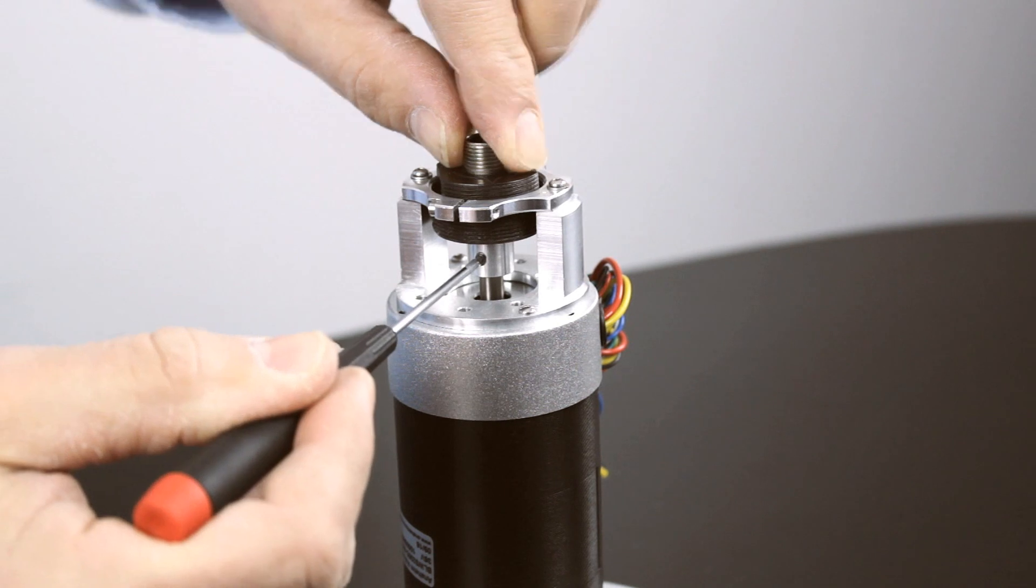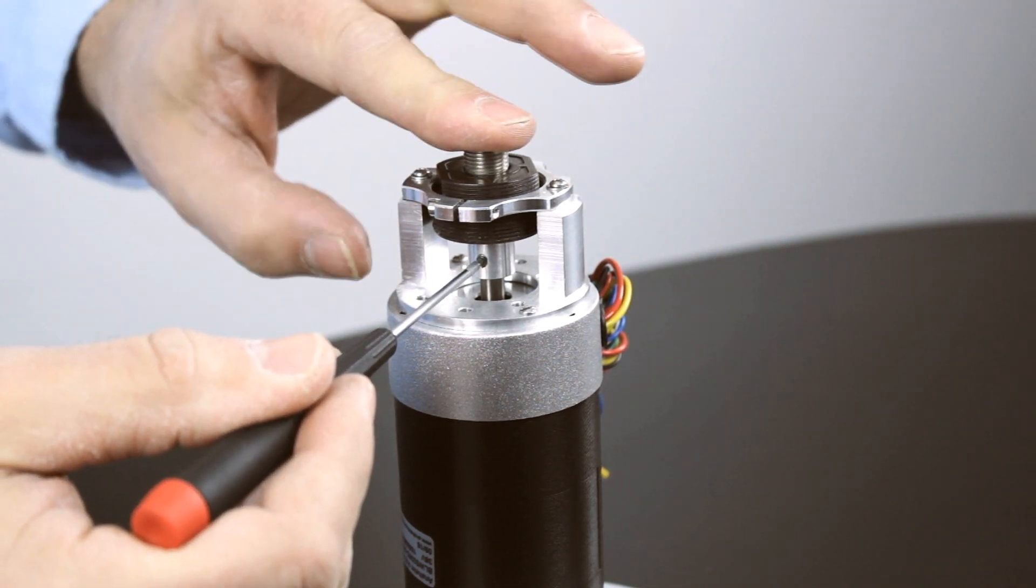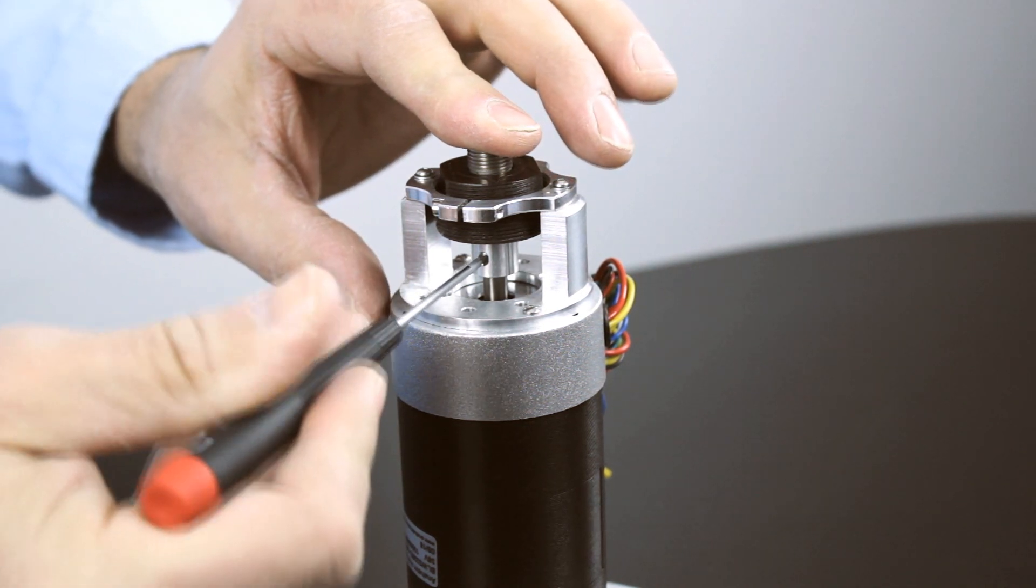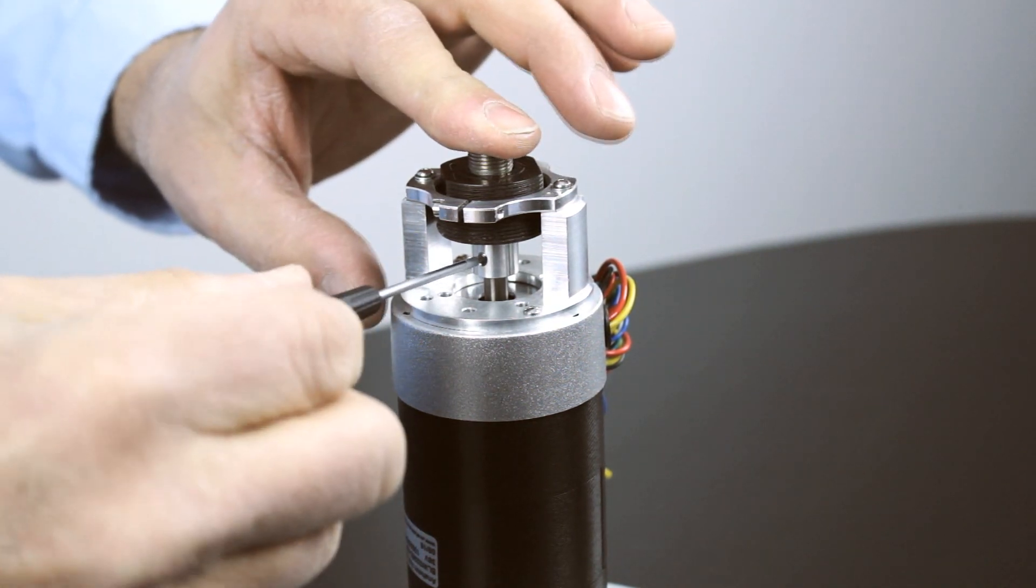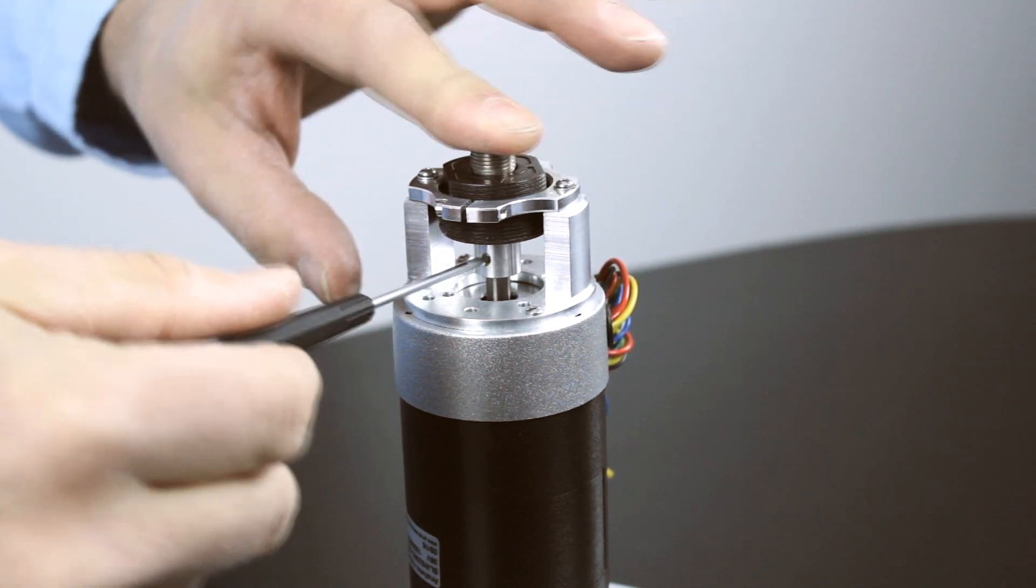To begin, push down on the encoder module while lifting up with the hex wrench, ensuring the tapers on the magnet holder and encoder fit together. Tighten the set screw on the magnet holder until there's no play.